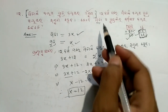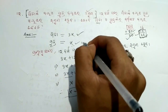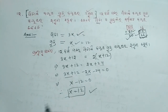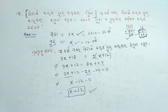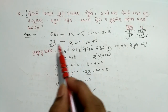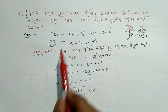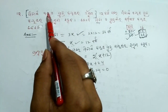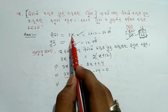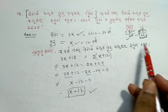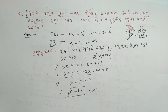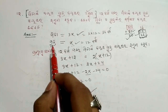Therefore x equals 12. The question is answered. The father's age and son's age have been found — the son's age is x, so three times that gives the father's age.